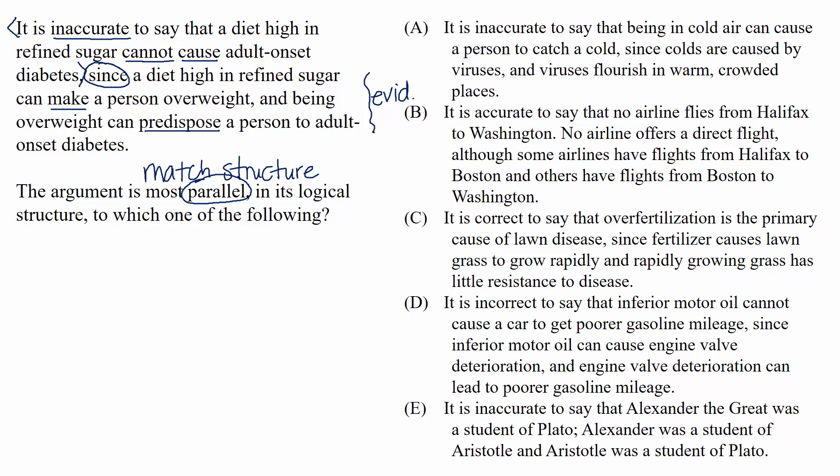So I see a few terms that repeat in this stimulus, which means that we could break this down symbolically. If we call a diet high in refined sugar X and we call adult-onset diabetes Z, then this is what our argument looks like. Our conclusion is that it's wrong to say that X can't cause Z because, and here's our evidence, X can cause Y, which can cause Z.